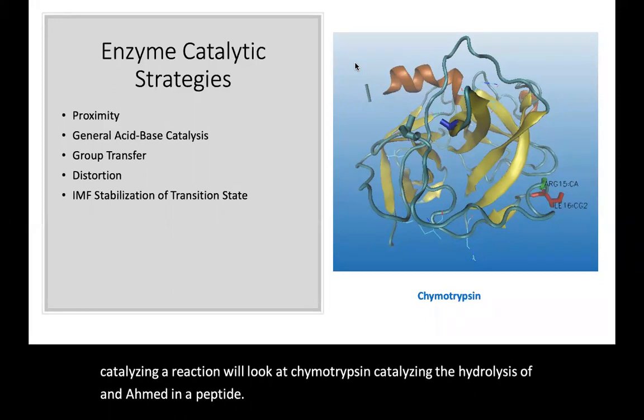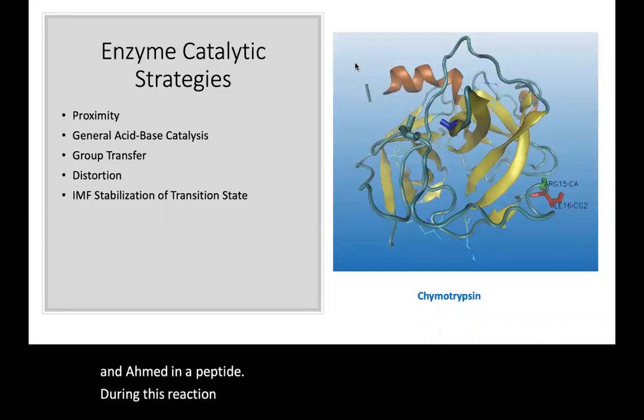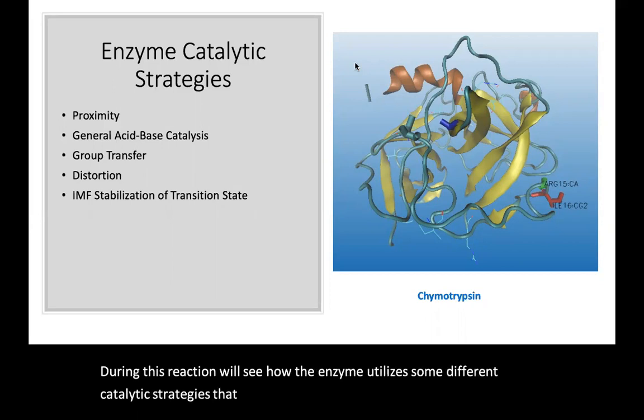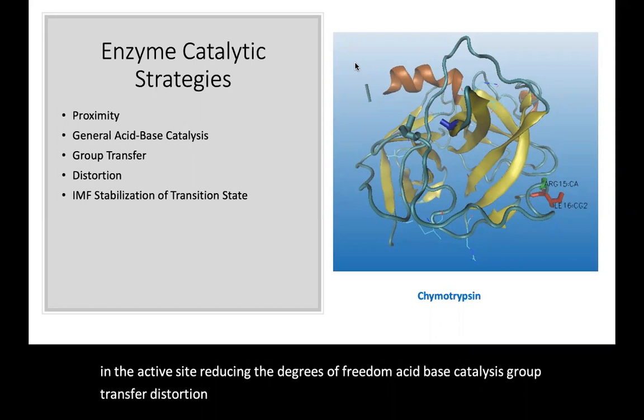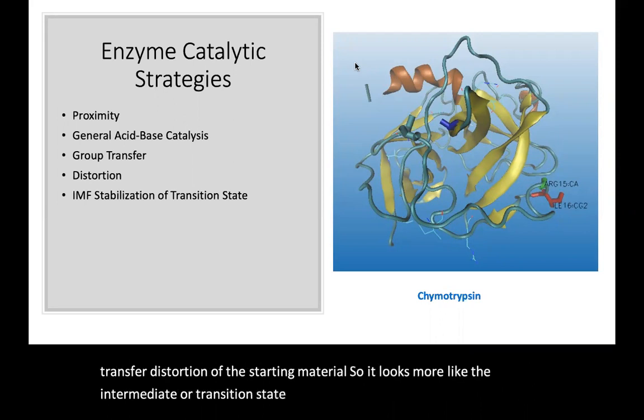During this reaction we'll see how the enzyme utilizes some different catalytic strategies that you've already covered. Proximity, that's being in the active site reducing the degrees of freedom. Acid-base catalysis, group transfer, distortion of the starting material so it looks more like the intermediate or transition state, and stabilization through intermolecular forces of the transition state.